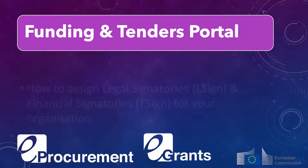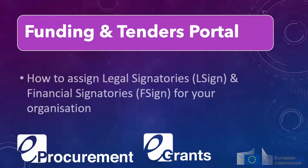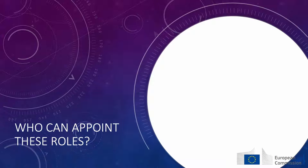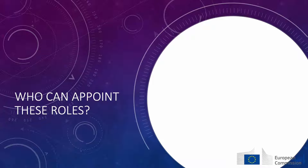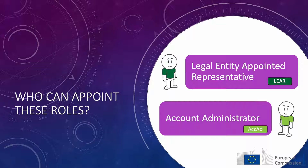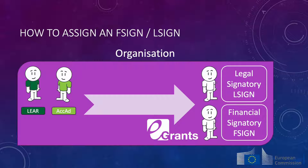Welcome to the tutorial about how to assign an L sign or F sign for your organization. Every organization appoints its own legal signatory and financial signatory roles at the level of the organization. The LEAR or the account administrator is responsible for appointing these roles. They can nominate as many L signs and F signs as necessary for the organization.